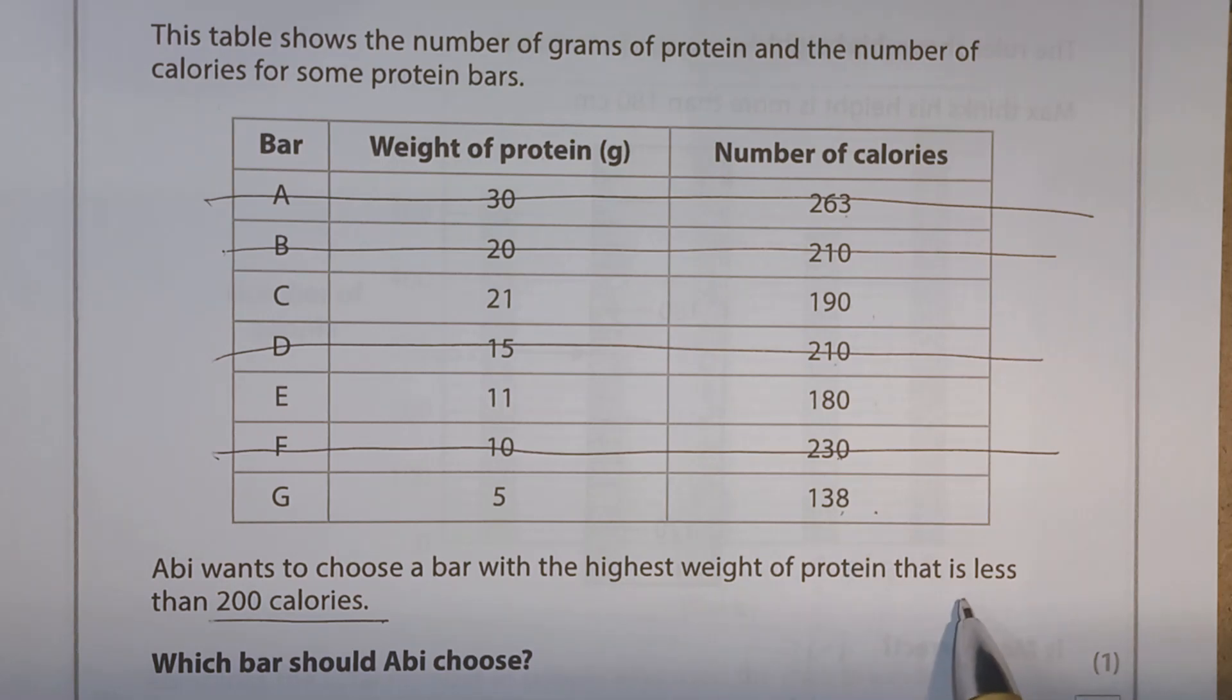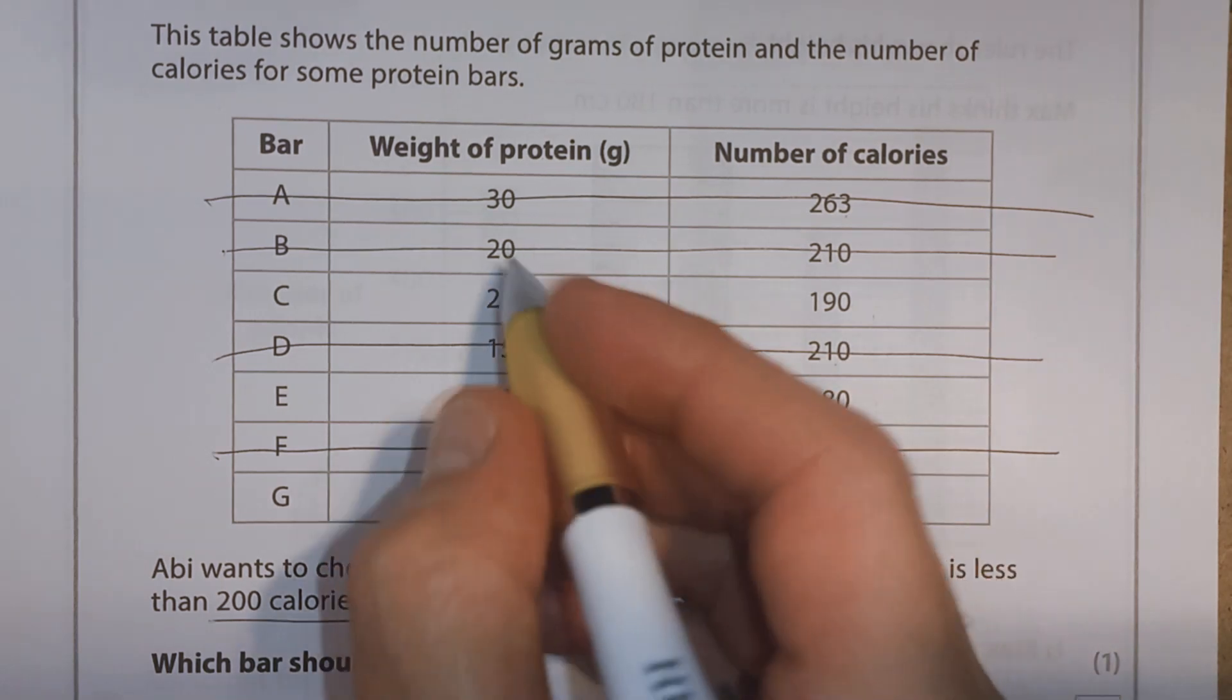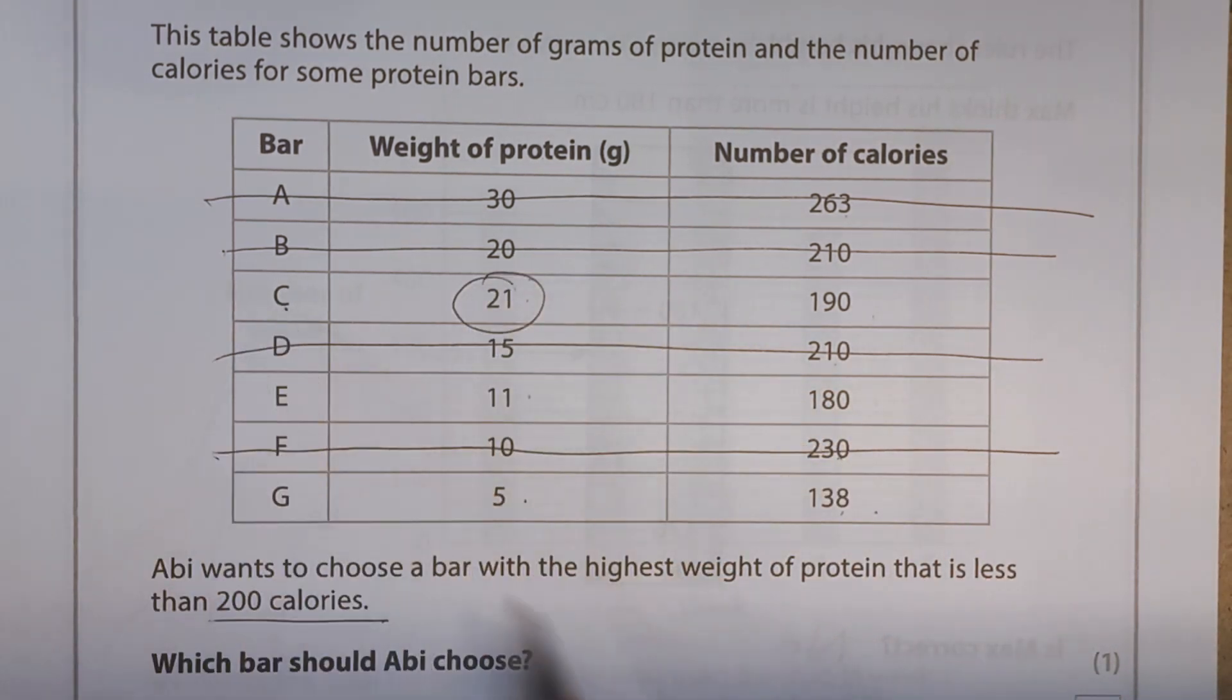We need the one with the highest weight of protein. So now we look at this column, weight of protein. We've got 21, 11, and 5. That's the highest one. So she chooses bar C.